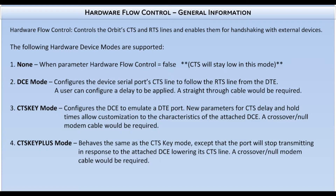With hardware flow control enabled, there are new serial parameters to configure named CTS delay and CTS hold. In DCE mode, CTS delay will delay the assertion of the CTS line after RTS is asserted. In CTS key mode, CTS delay will delay the data from being sent after CTS is asserted. CTS hold is a parameter to configure the time to hold CTS as asserted after data is finished transmitting.